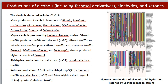Our results showed that Lachnospiraceae strains produced alcohols of different chain lengths, and the main producers are members of Blautia, Roseburia, Lachnospira, Myroides, etc. Ethanol and 1-pentanol were the most produced alcohols.